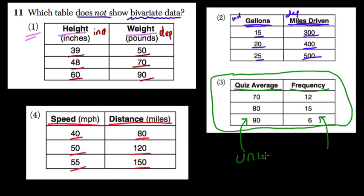This is a univariate table. It's not as if the average I got determines the frequency at which it will occur. It's possible for everyone to get a 90. It's possible for everyone to get an 80, and it's possible for everyone to get a 70, or any other score for that matter. These are independent of each other. They're not related, so it's a univariate table.